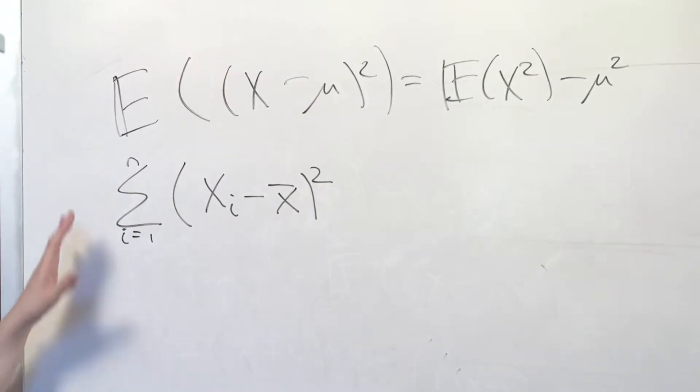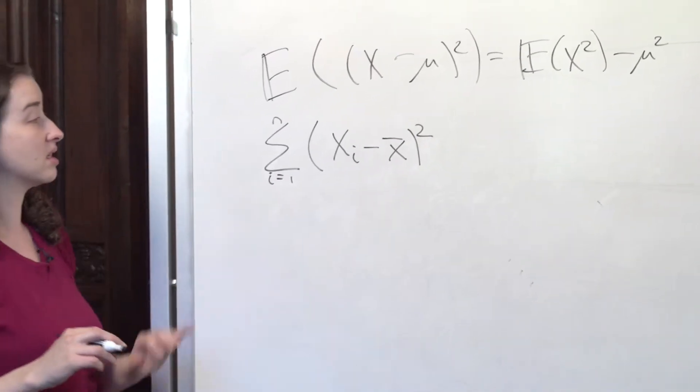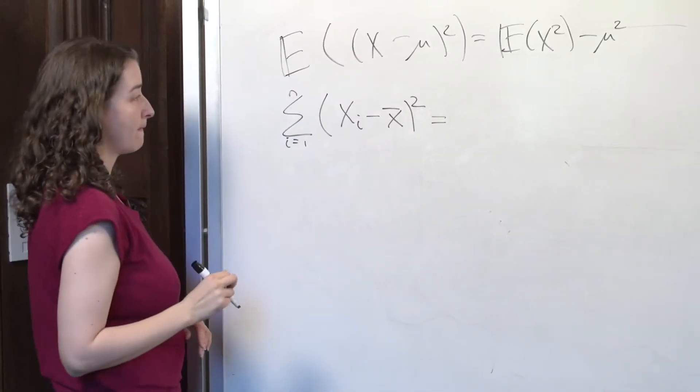So really, I should put in a 1 over n minus 1 here to make this equal to s squared. But I don't need it for the moment just to show you what this quantity can be equal to.